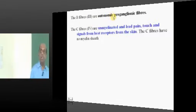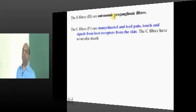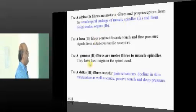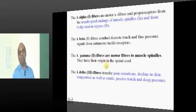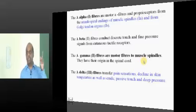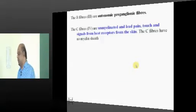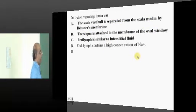Type B fibers are autonomic preganglionic fibers. Type A gamma is the one which supplies the muscle spindles. So these are all the things which you should not basically forget.